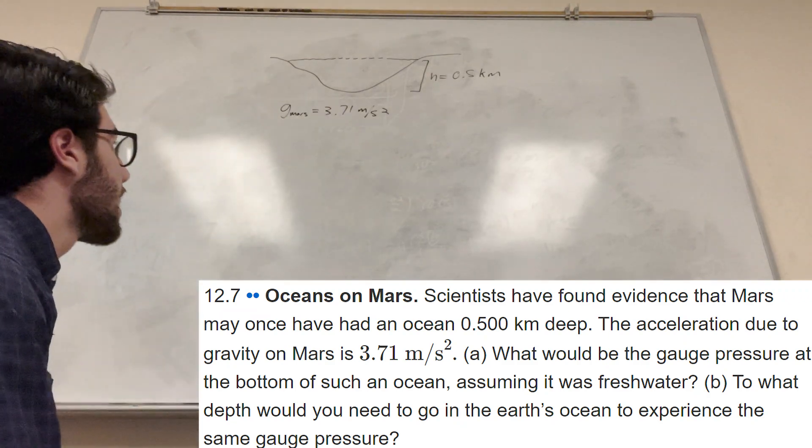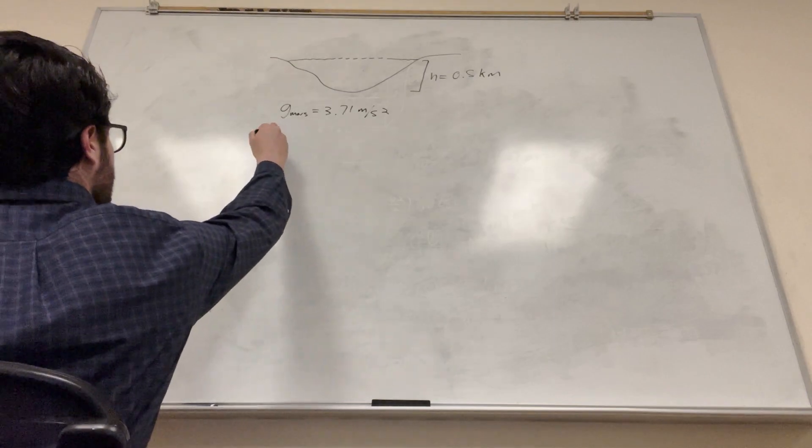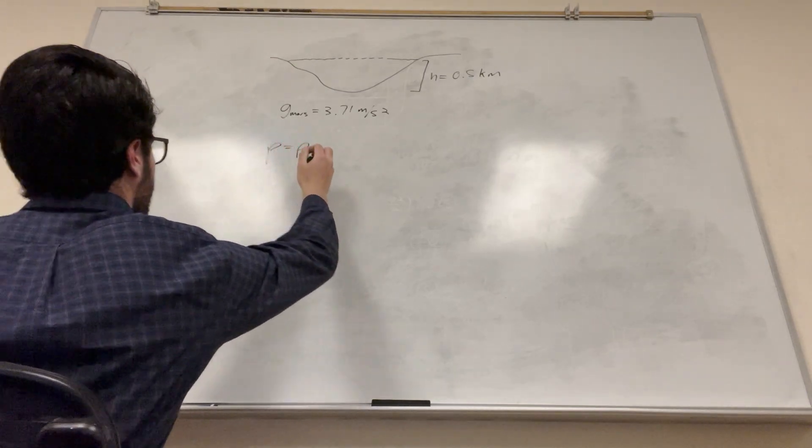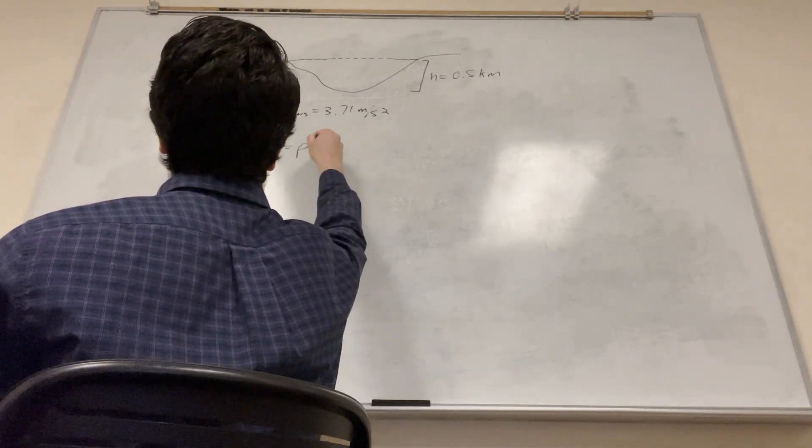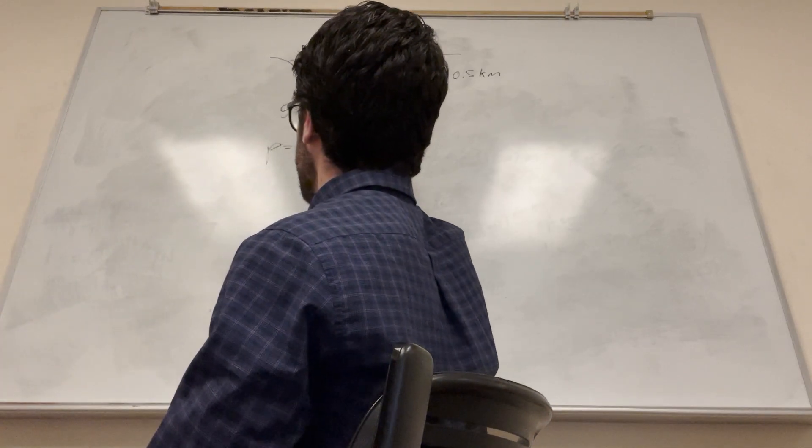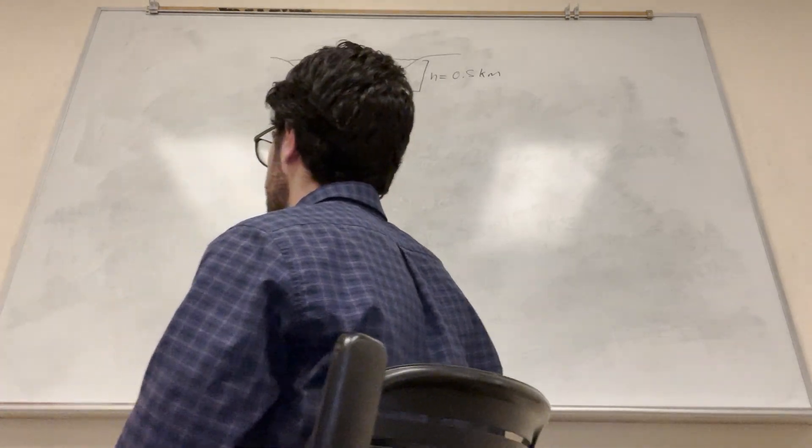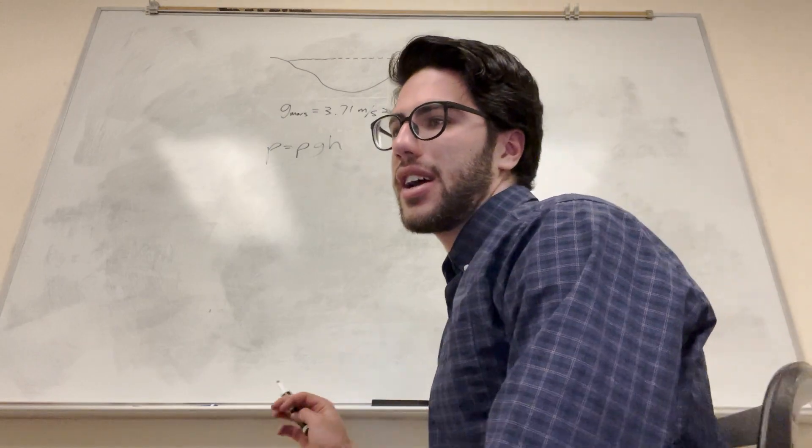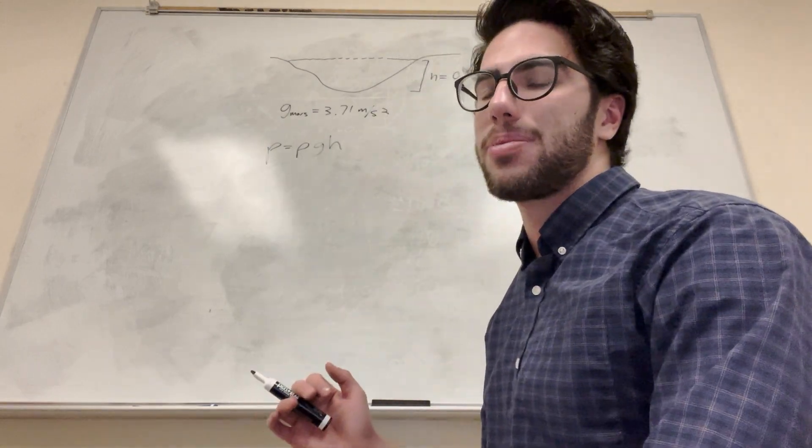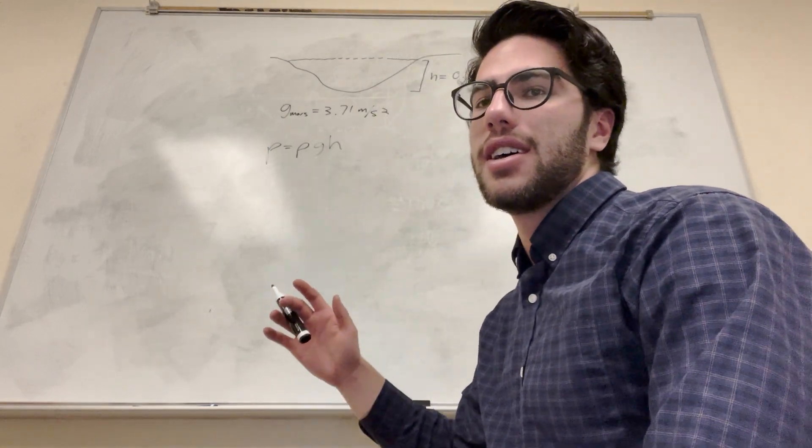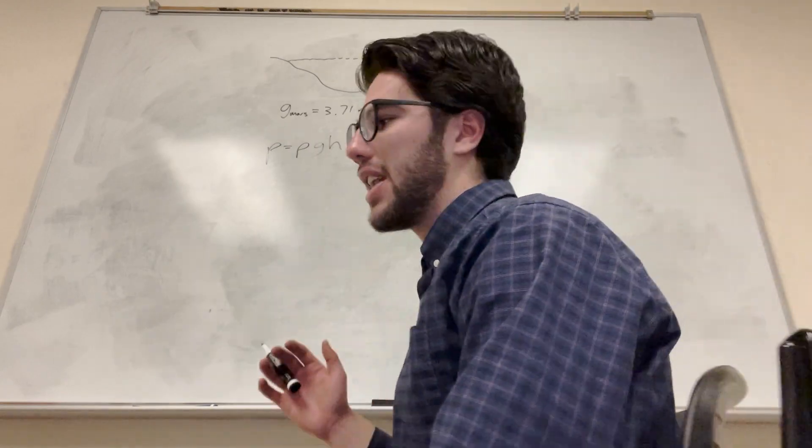So let's go ahead and calculate that. So our formula for pressure is equal to density of the liquid times the gravity and then times the height. That's gauge pressure. If you're doing a total pressure, you have to add atmospheric pressure to that or whatever's on top. But we're not concerned about that. We're just finding gauge pressure.